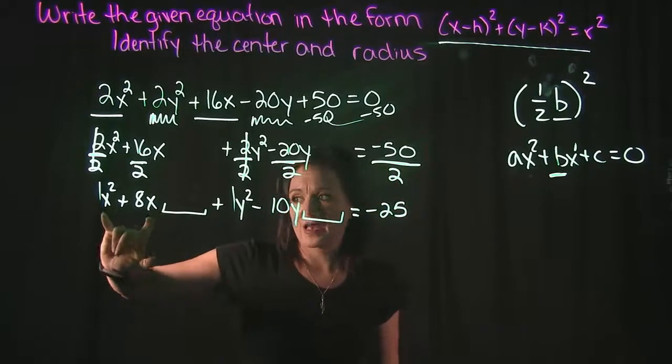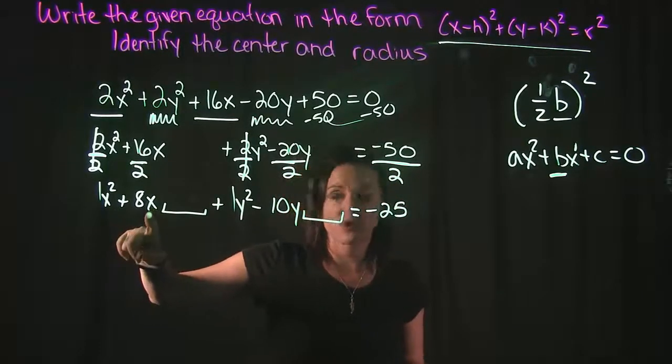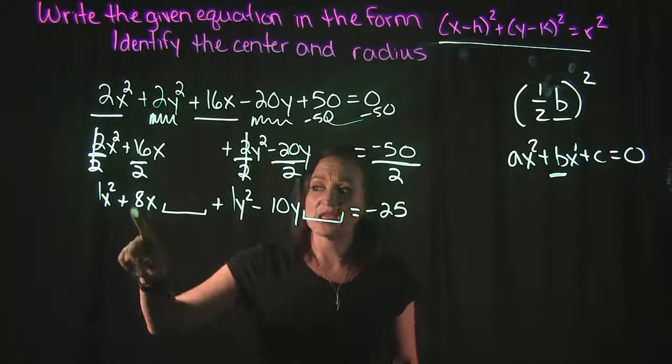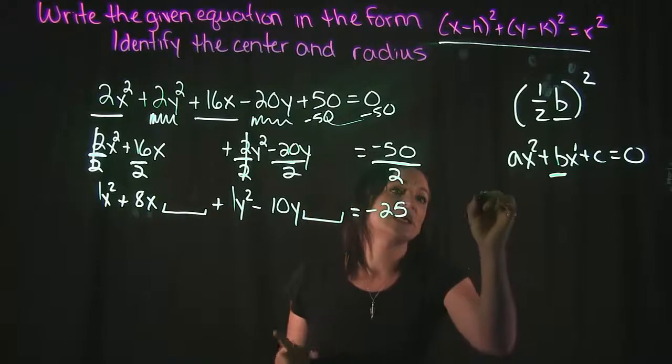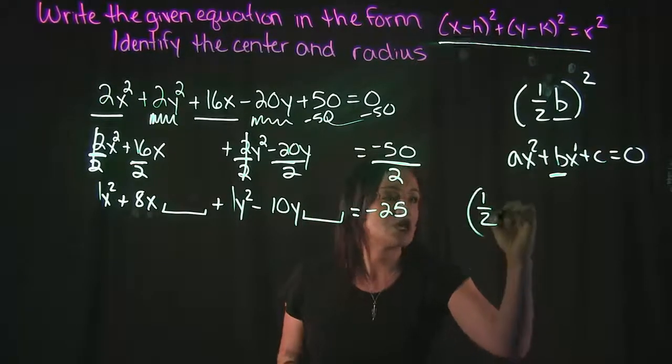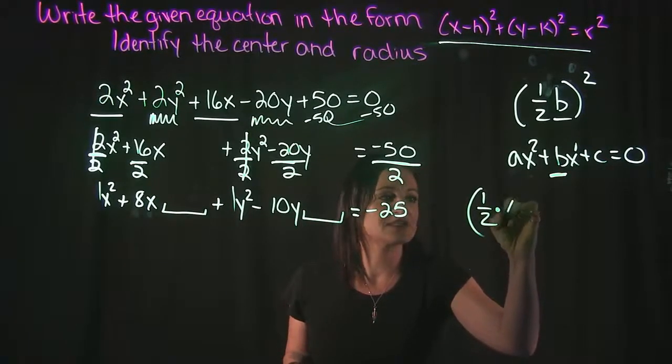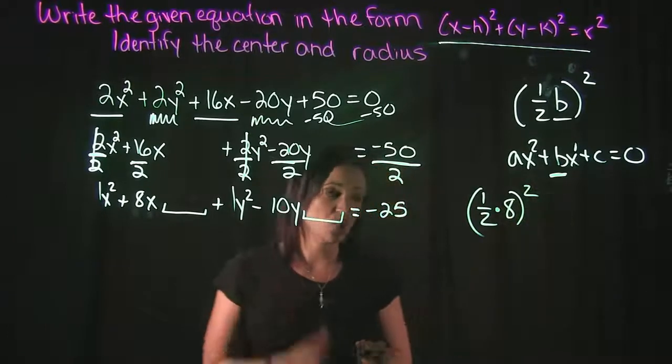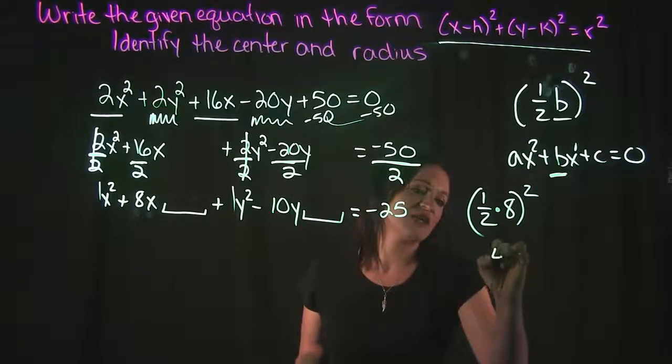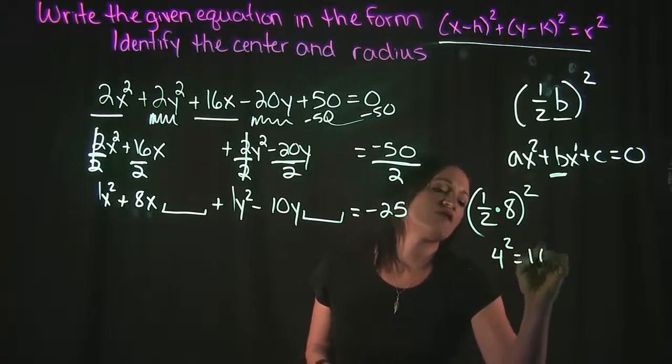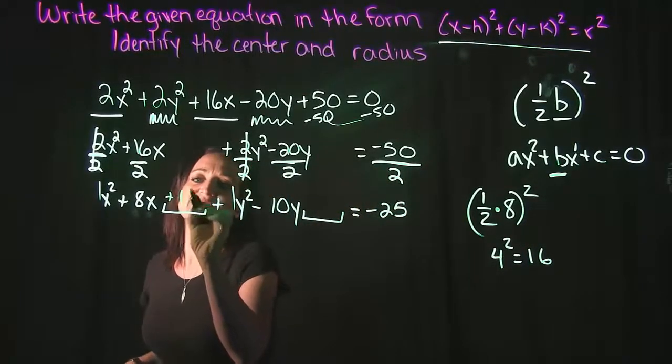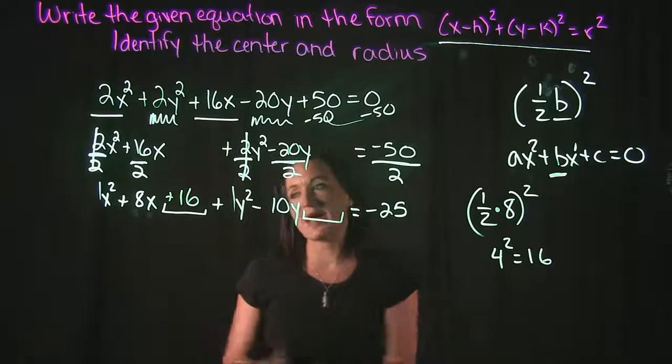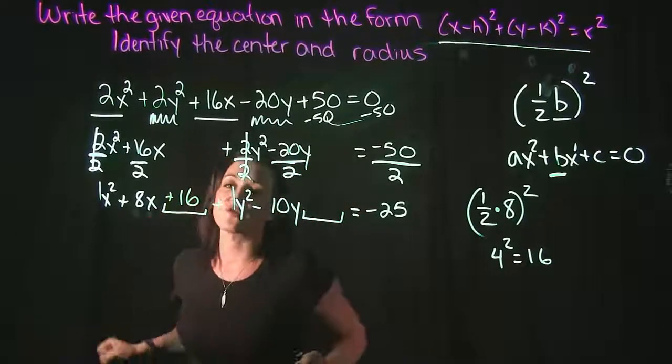For our x values, x to the first power is right over here. 8 is the coefficient for it. So for my x terms, b is going to be 8. So I would have 1/2 times 8 then squared. Well, half of 8 is 4 and 4² is 16. So 16 is going to be the magic number that I'm able to put in right over here. I'm going to pause and not get to the factoring yet until we do our y terms.